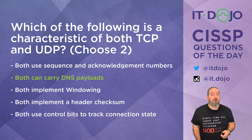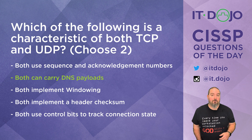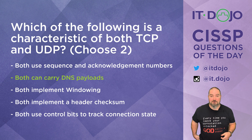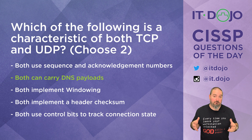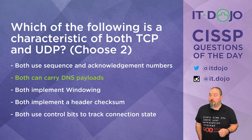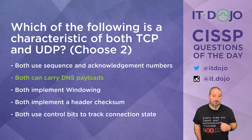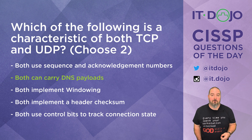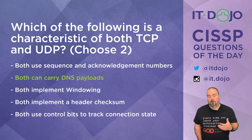Choice number three says that both TCP and UDP implement windowing — that is wrong. Only TCP implements windowing. Windowing is a mechanism built into TCP that allows it to control the total quantity of outstanding data at any particular moment in time. It has a window that can either be full or emptied out; if the window is full, no more data can be transmitted. UDP does not do any of that — UDP just sends the data out. TCP really goes the extra mile, and windowing along with sequence numbers and acknowledgement numbers are mechanisms it uses to facilitate that.